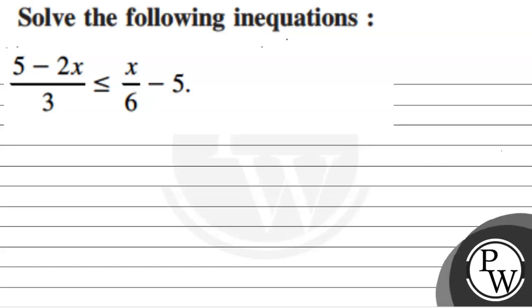Hello, let's first read the question. The question says solve the following inequality. The given inequality is 5 minus 2x divided by 3 less than or equal to x divided by 6 minus 5.